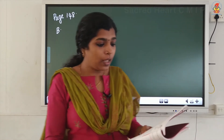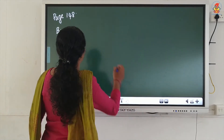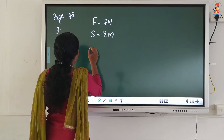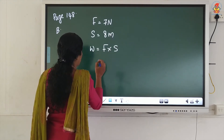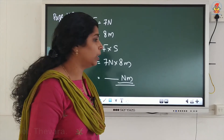A force of 7 Newton is acting on an object and the displacement is 8 meter in the direction of the force. The force acts on the object through the displacement. What is the work done in this case? Force is equal to 7 Newton, displacement is equal to 8 meter. W = F × S, that is 7 Newton into 8 meter. Just multiply 8 into 7 and you will get the answer in Newton meter.